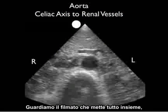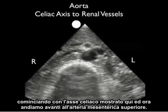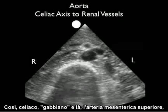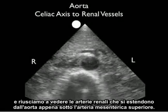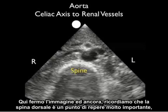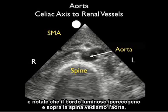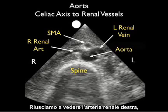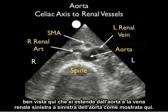Let's look at a video clip that puts it all together, beginning with the celiac axis, and now moving on to the superior mesenteric artery — celiac, seagull, and there, the superior mesenteric artery. We can actually see the renal arteries coming off the aorta just below the superior mesenteric artery. Here I'll freeze it — the spine is our very important landmark, and notice that hyperechoic bright rim. On top of the spine we see the aorta, and anterior to the aorta we see the superior mesenteric artery with its bright or hyperechoic rim. We can actually see the right renal artery, well seen here, coming off the aorta, and the left renal vein to the left of the aorta.